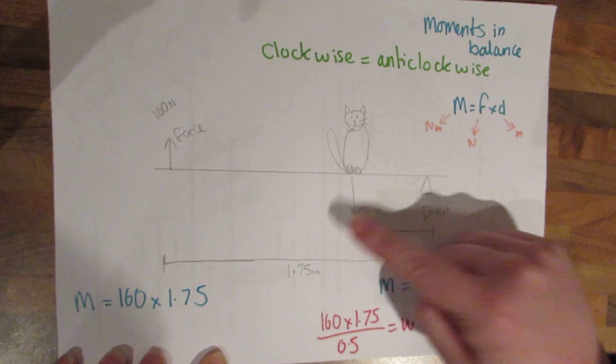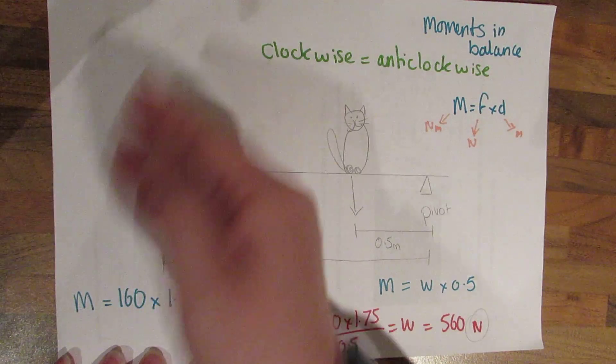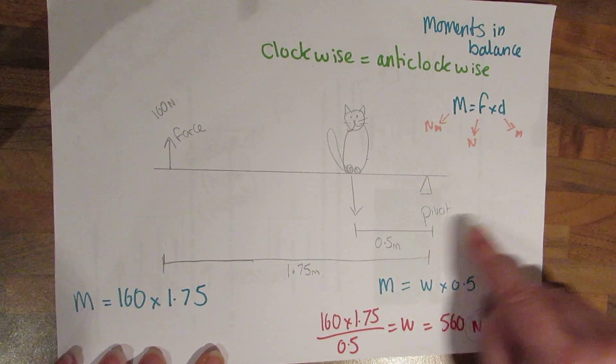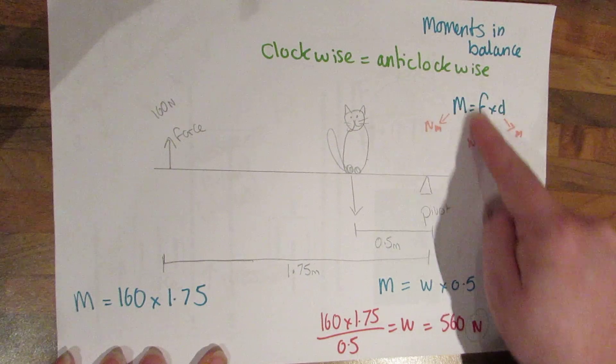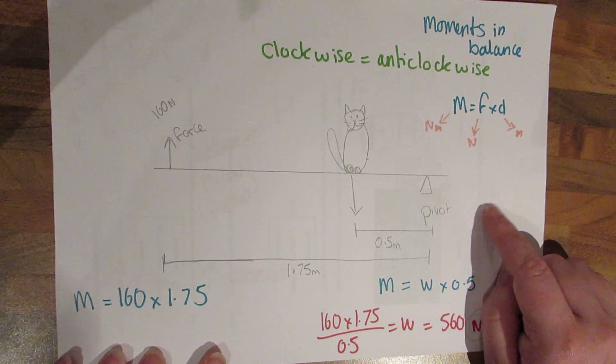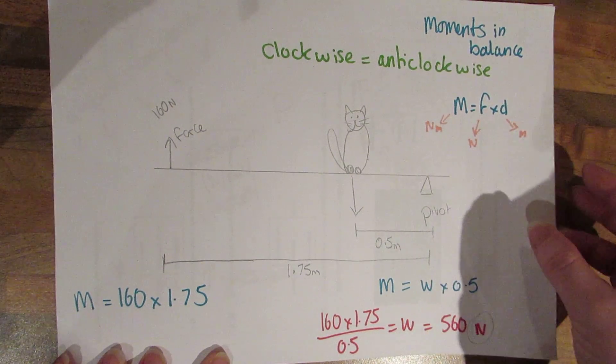And what we need to find out here is the weight of Primrose. So we have the force of something being lifted up and the distance, and the distance of Primrose from the pivot. So first of all, we work out the clockwise moment. Then when we know what the anticlockwise moment is, we can use maths and manipulate that to work out the weight.